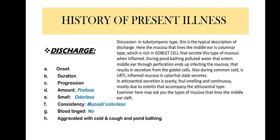Occasionally, a patient may have had discharge in childhood, followed by an asymptomatic period, and then develops discharge again. In such a situation, include the recent onset in the chief complaint with its duration, while the history of the childhood disease goes in the history of past illness.